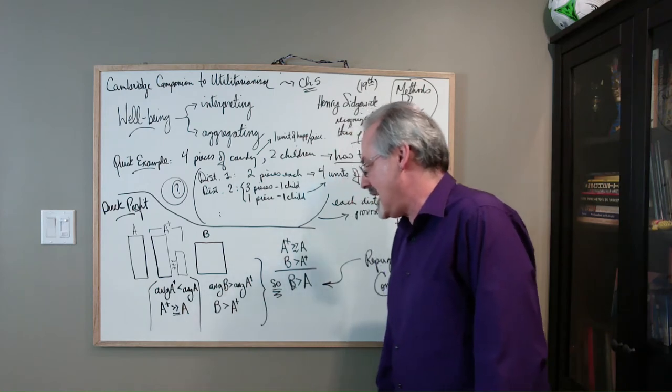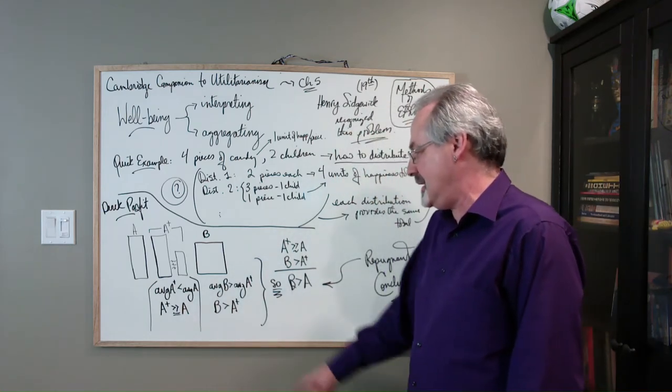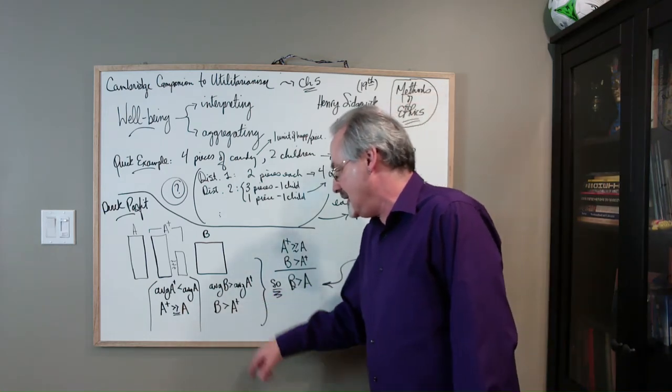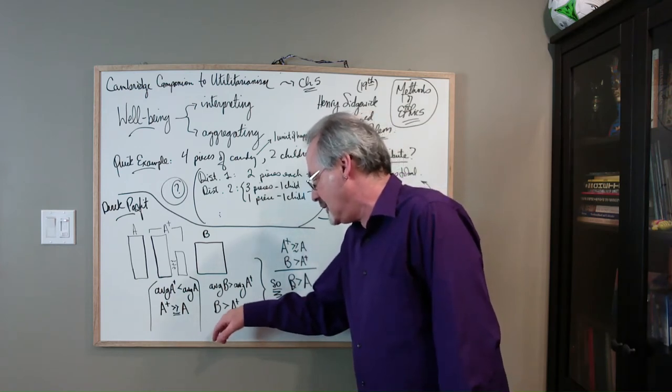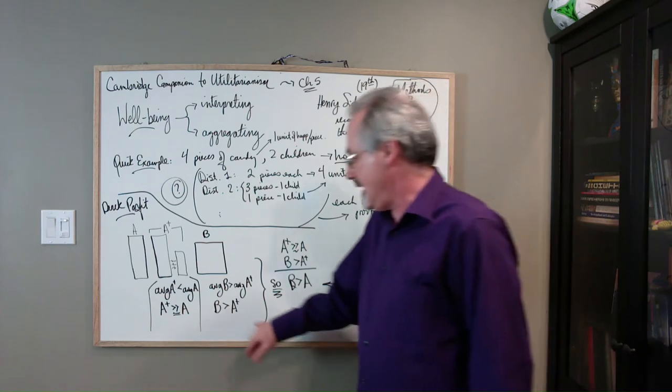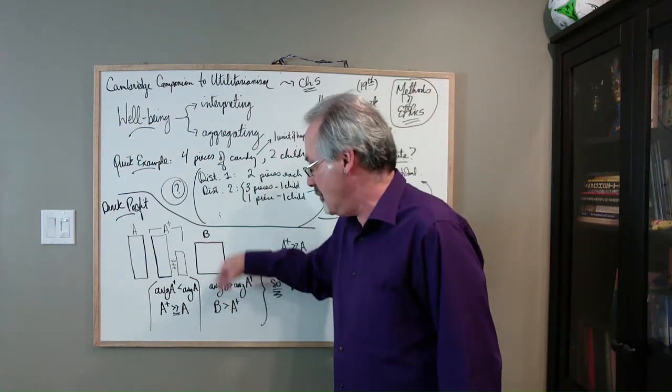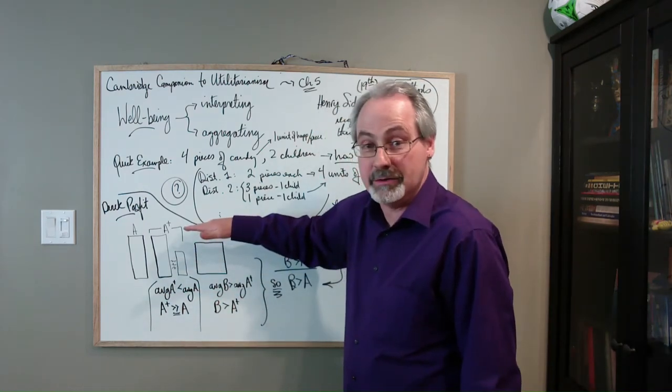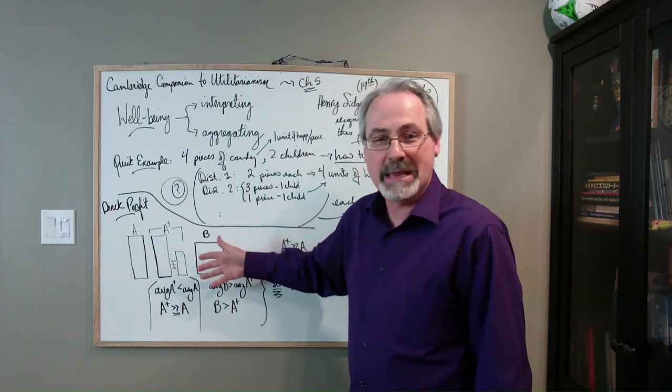But look at B now, the average of B could be a little bit higher than the average of A plus. And so we might say something like, well, B is a little bit better than A plus in that sense. So you have more people living at a higher standard. So it seems the averages make an impact here.